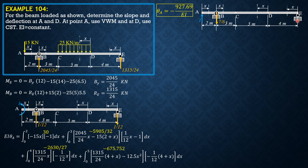The reaction at B is 1/6 upward. From summation of moments about B: 1 times 2 equals reaction at E times 12, so 2/12 equals 1/6 upward.